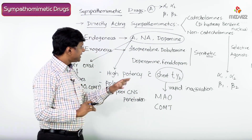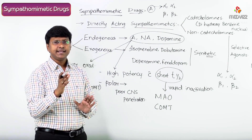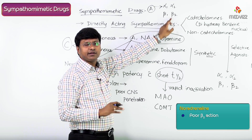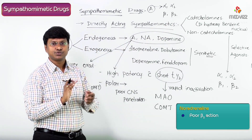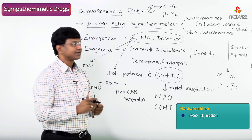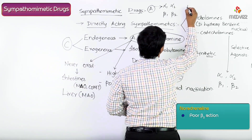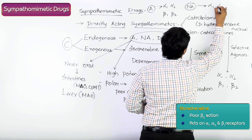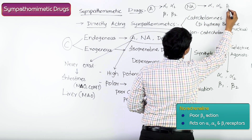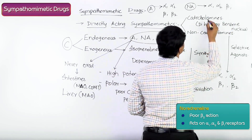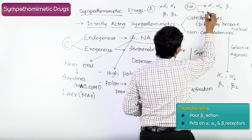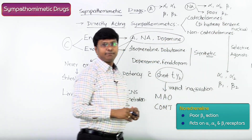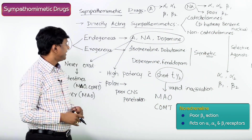Noradrenaline has little poor beta-2 action. It predominantly acts on alpha-1, alpha-2, and beta-1 receptors, with poor beta-2 activity.